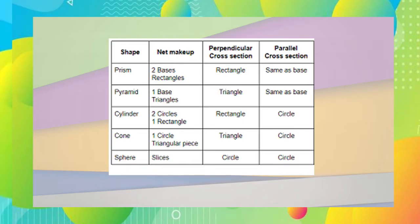Perpendicular is another word for vertical cross-section, and parallel cross-section is another word for horizontal.